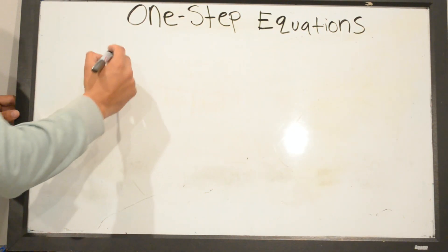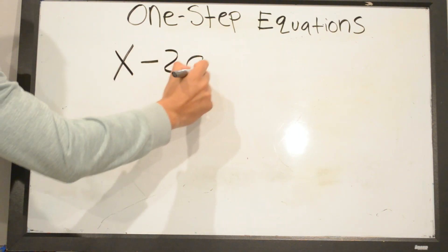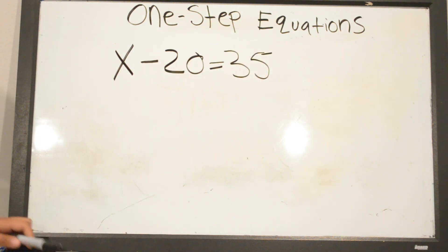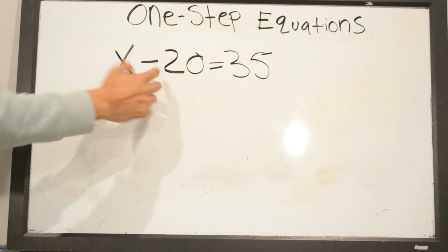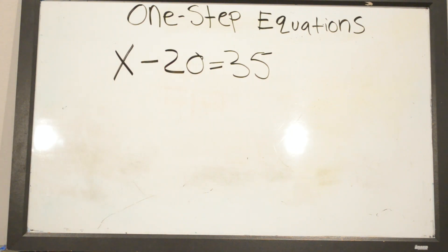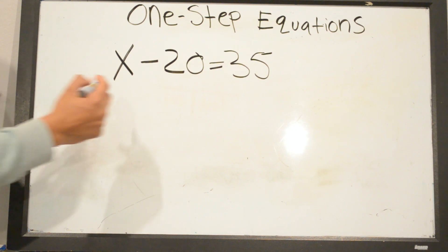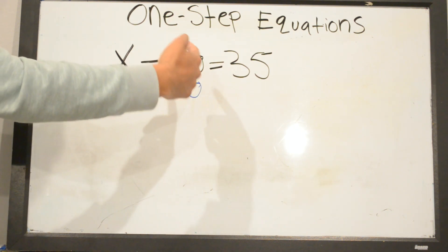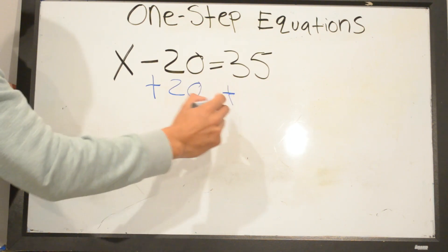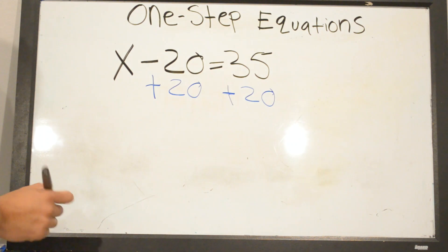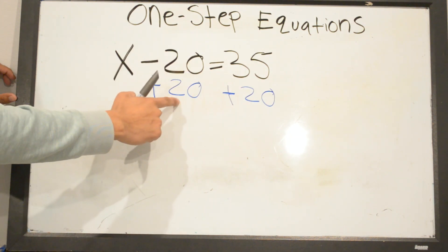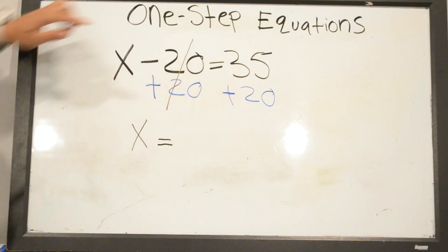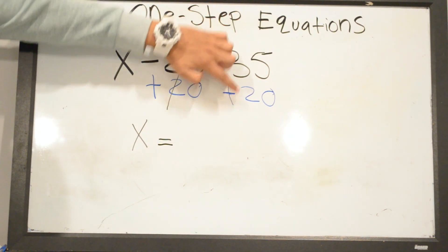Another problem we're solving is X minus 20 equals 35. Same thing we did on the previous problem — to get rid of a negative number, do the opposite, which is a positive number. To get rid of negative 20 we add positive 20. Whatever we do on one side of the equal sign we always have to do on the other side. Negative 20 and positive 20 cancel, leaving X by itself.